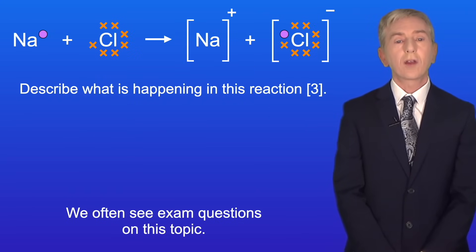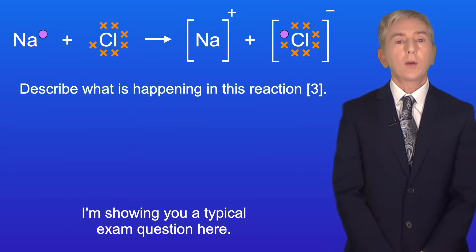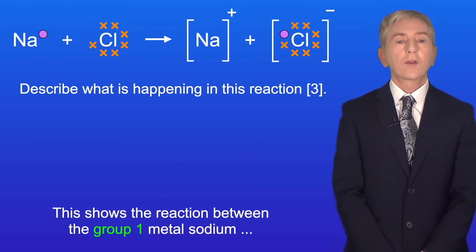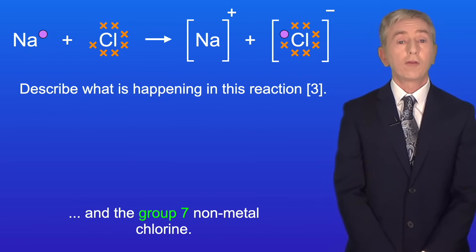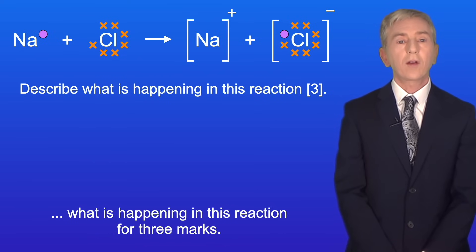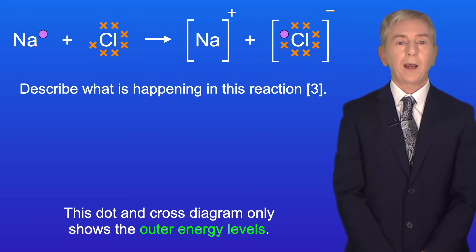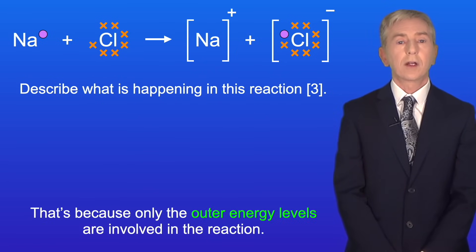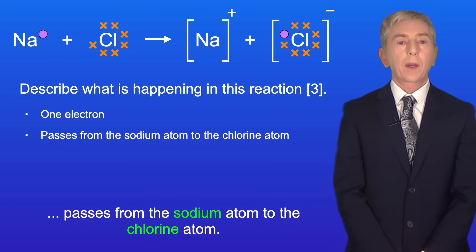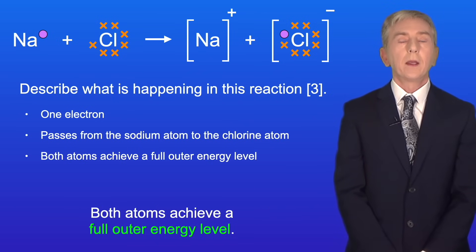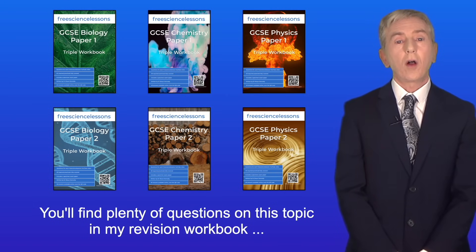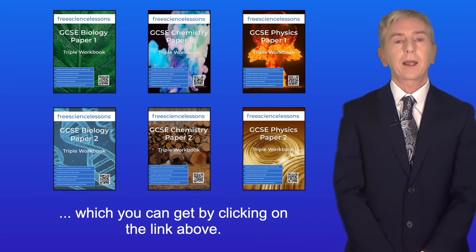Now we often see exam questions on this topic. This shows the reaction between the group 1 metal sodium and the group 7 non-metal chlorine, and the question asks us to describe what's happening for three marks. This dot and cross diagram only shows the outer energy levels, because only the outer energy levels are involved in the reaction. We would say that one electron passes from the sodium atom to the chlorine atom, and both atoms achieve a full outer energy level. You'll find plenty of questions on this topic in the revision workbook linked above.